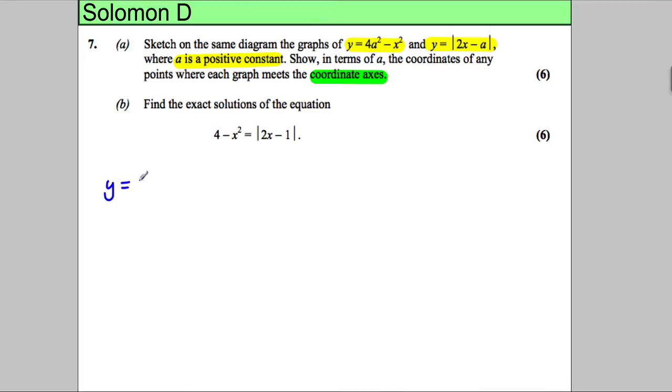Firstly, y is equal to 4a squared subtract x squared. If x is equal to 0, then y would be equal to 4a squared. So we know that 0, 4a squared is a point of crossing the axes.